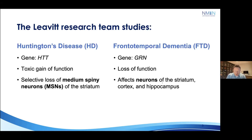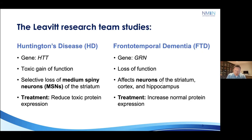They affect different areas of the brain, but we've got to target the neurons in the brain to have effective therapies. With a gain-of-function mutation, we want to reduce that toxic protein, and with a loss-of-function mutation, we want to either replace or repair the gene to increase the production of the normal protein.